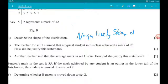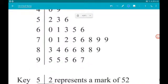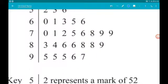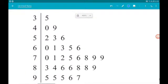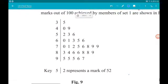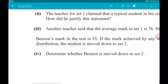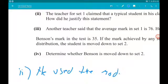Okay, part 2. The teacher for Set 1 claims that a typical student in his class achieved a mark of 95. How did he justify this statement? Okay, so let's find the 95. There are three students that scored 95. If we look through all of the other scores, nothing else came up three or more times. So 95 is the mode. The way that he's justified that is he used the modal score.